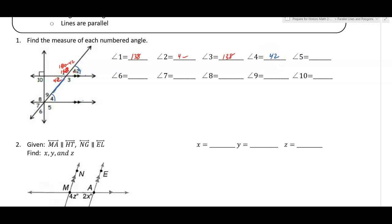Angle ten is probably the easiest because the box tells us that's 90 degrees, so angle ten is also 90 degrees. Angle five is another easy one — if this is 90 degrees, angle eight has to be 90 degrees and angle five has to be 90 degrees.